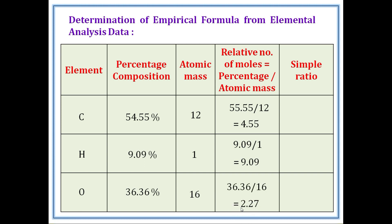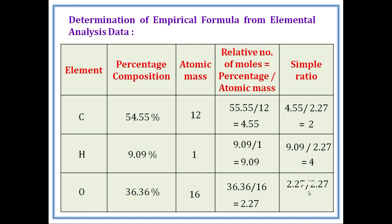Oxygen 36.36 divided by 16 equals roughly 2.27. So the mole values are: Carbon 4.55, Hydrogen 9.09, Oxygen 2.27. The smallest number is 2.27. Dividing each by 2.27: Carbon 4.55 ÷ 2.27 = 2, Hydrogen 9.09 ÷ 2.27 = 4, Oxygen 2.27 ÷ 2.27 = 1.